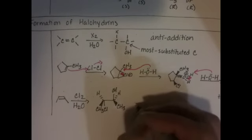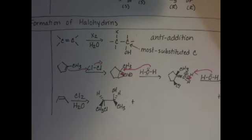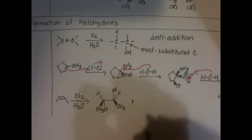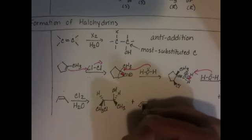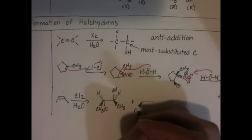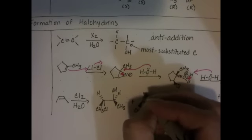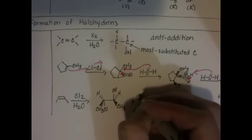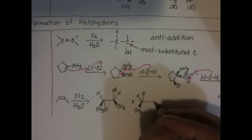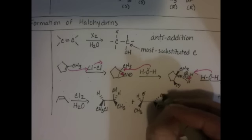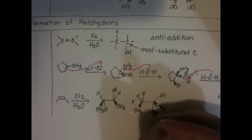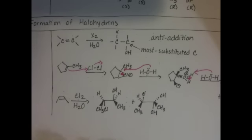And we could also have things going the different way, where we put the chlorine down, we could have put it up instead. If we took some time to think about it in our head, we could probably predict whether or not these two molecules were the same or if they were isomers of each other. Sometimes it's faster to just draw them both and assign stereochemistry.